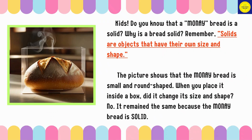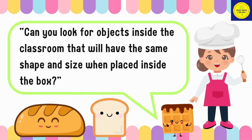Do you know that a Moneye bread is a solid? Why is bread a solid? Remember, solids are objects that have their own size and shape. The picture shows that the Moneye bread is small and round. When you place it inside a box, did it change its size and shape? No! It will remain the same because the Moneye bread is solid. Can you look for objects inside the classroom that will keep the same shape and size when placed inside a box?